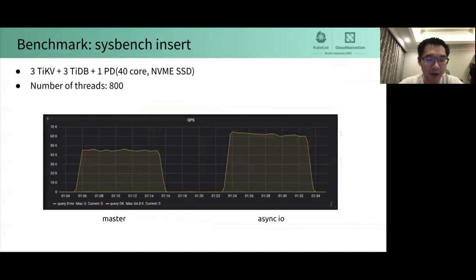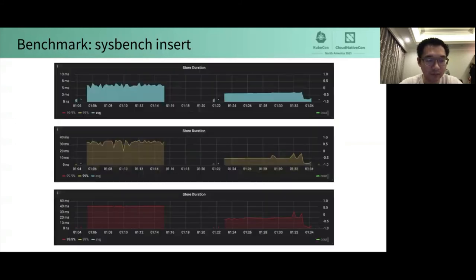Here is a benchmark result of the Sysbench insert. We use 3 TiKV, 3 TiDB, and 1 PD. The number of threads of Sysbench client is 800. Look at this figure. Asynchronous IO's QPS is more than 30% higher than Master's.